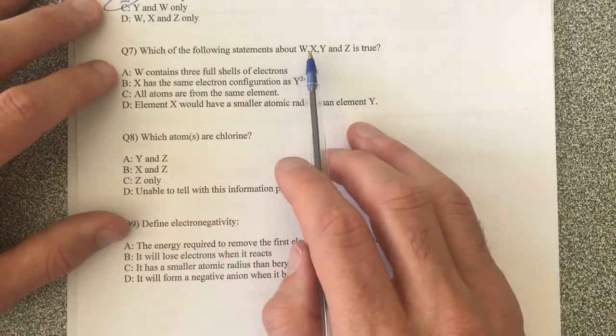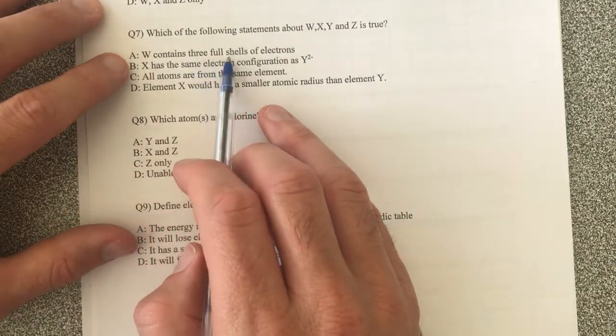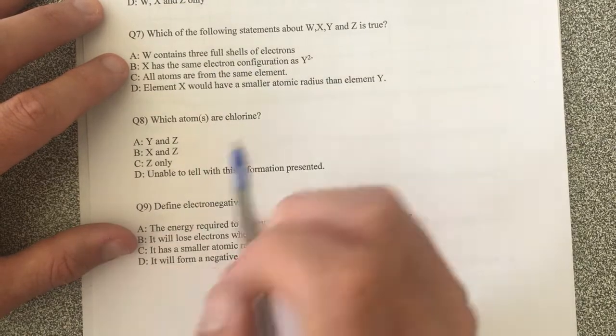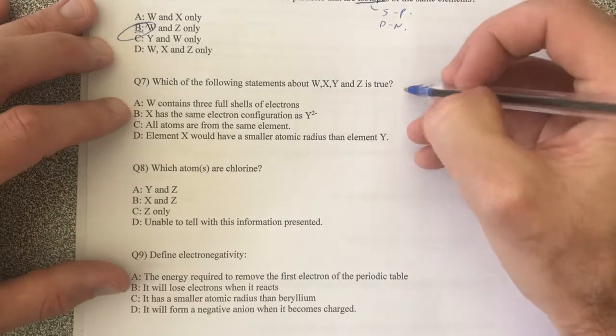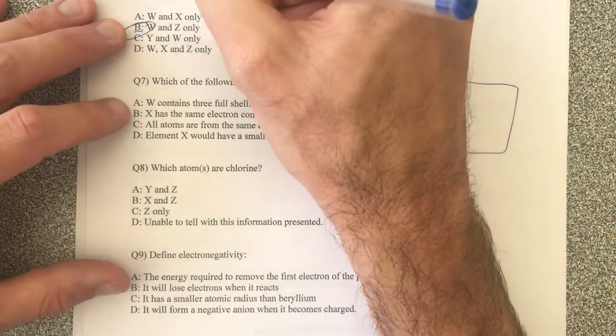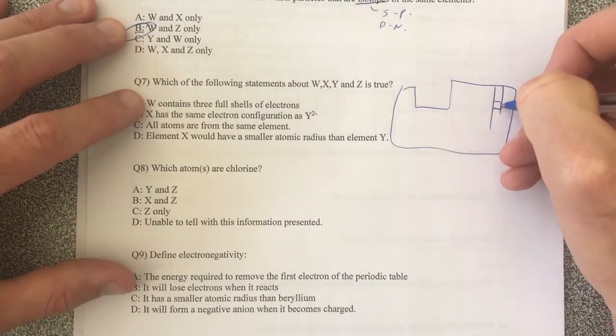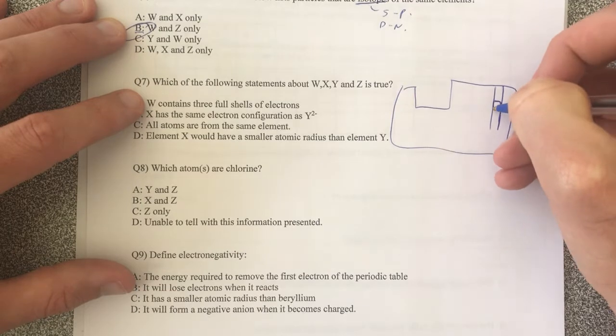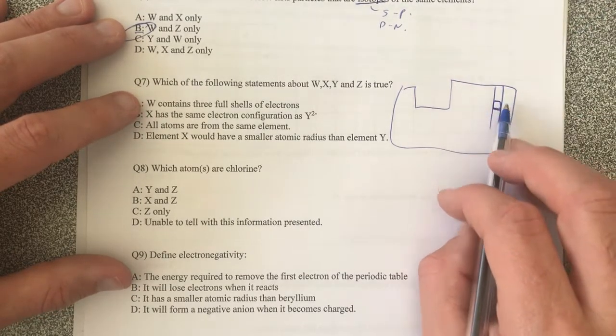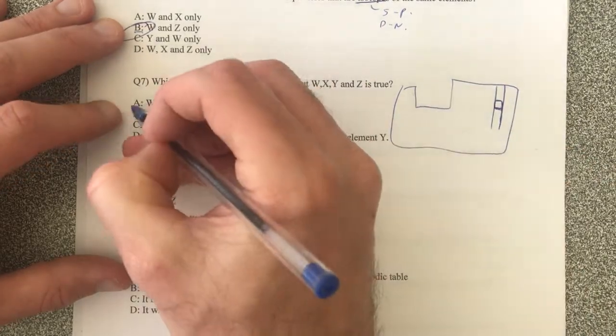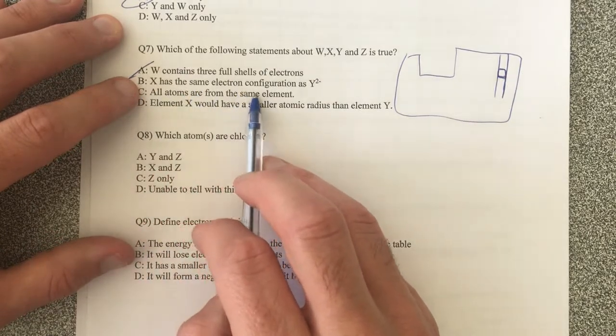Which of the following statements about W, X, Y, and Z is true? W contains three full shells of electrons. I need to be a bit more effort with this. But if I was to look at it, if I was to get a periodic table, if I have 17, that makes me sit in my halogen, that means he wouldn't have a full shell on the outside because only noble gases or ions would have full shells. So that's not right.